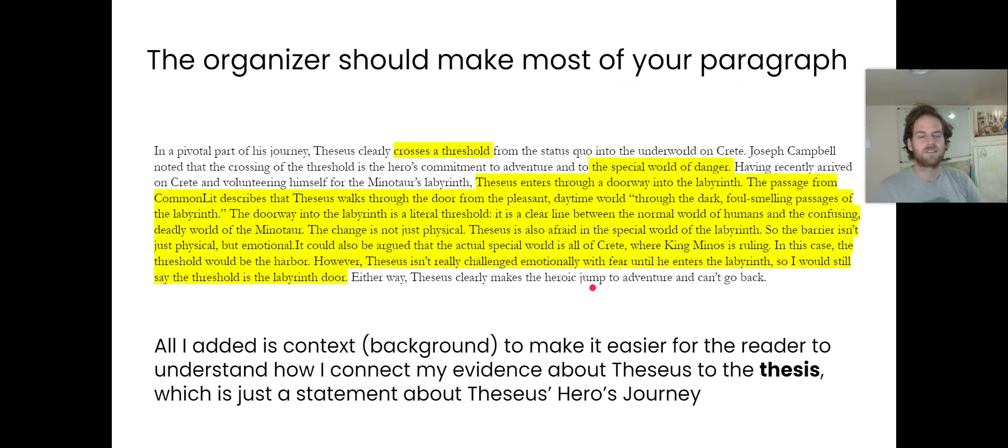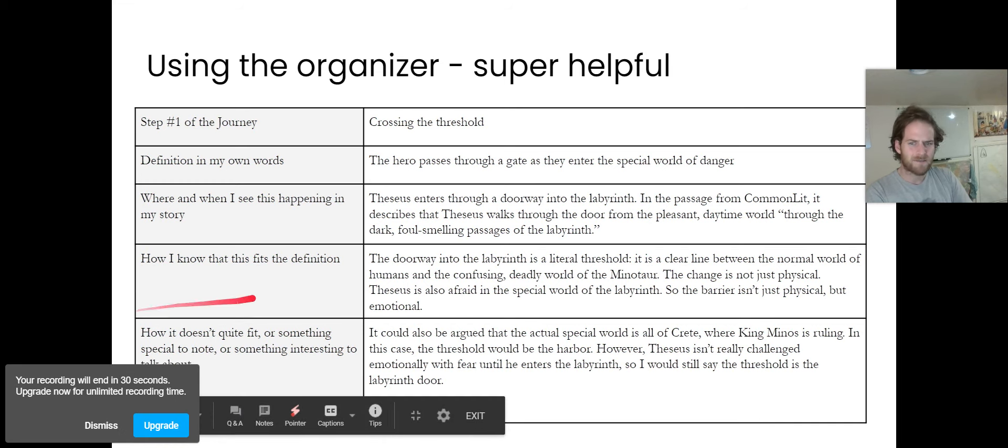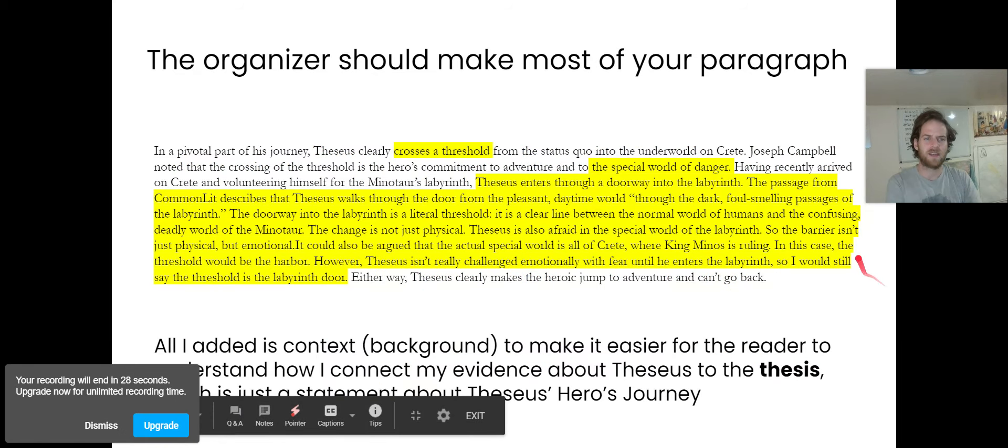Read over this. This is a great one to ask questions because you're going to do this three times. Two at least, but most of us will do it three. Okay, so you'll look at the three steps that you're focusing on. And with the organizer, parse out your thinking, define the step, say where it happens in your story, explain how you know it happens, and then how does it not quite fit or what's something special about it? And you'll turn that into your body paragraph.